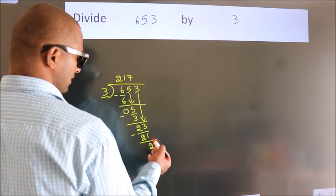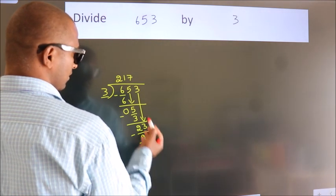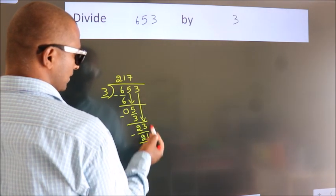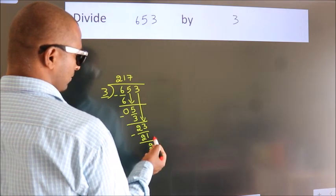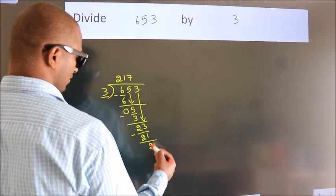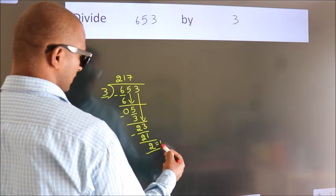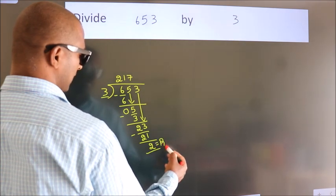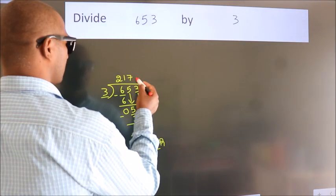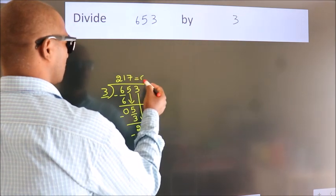After this, there are no more numbers to bring down, so we stop here. This is our remainder. This is our quotient.